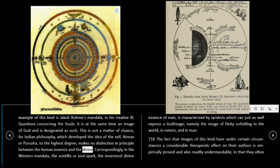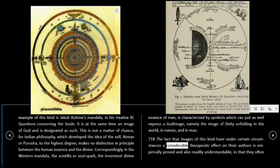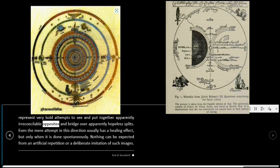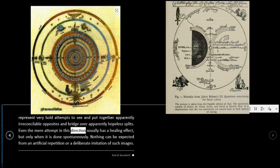Correspondingly, in the Western mandala, the scintilla, or soul spark — the innermost divine essence of man — is characterized by symbols which can just as well express a God image, namely the image of deity unfolding in the world, in nature, and in man. The fact that images of this kind have under certain circumstances a considerable therapeutic effect on their authors is empirically proved and also readily understandable, in that they often represent very bold attempts to see and put together apparently irreconcilable opposites and bridge over apparently hopeless splits. Even the mere attempt in this direction usually has a healing effect, but only when it is done spontaneously. Nothing can be expected from an artificial repetition or a deliberate imitation of such images.